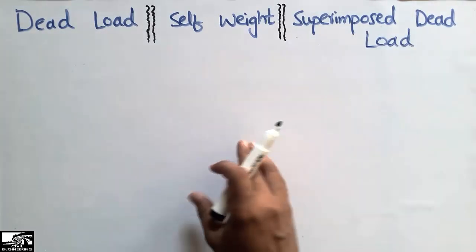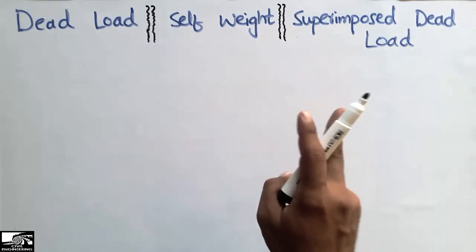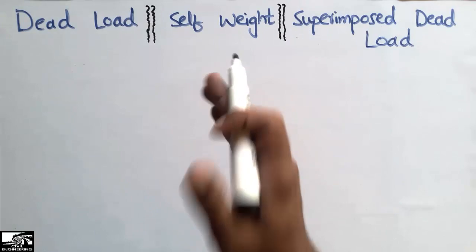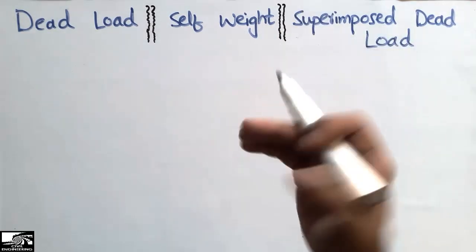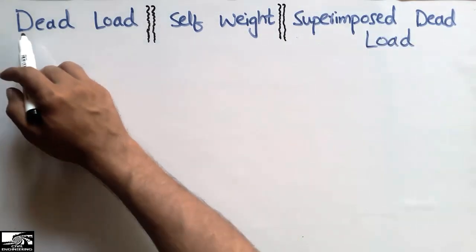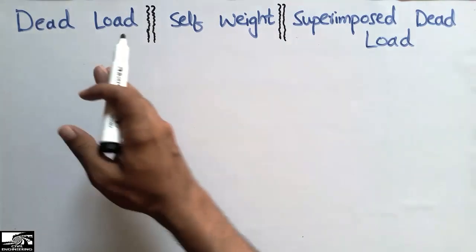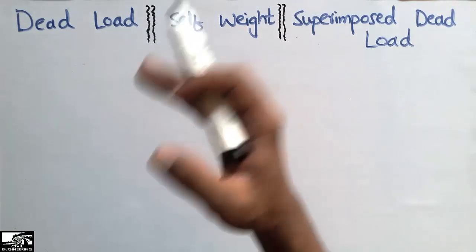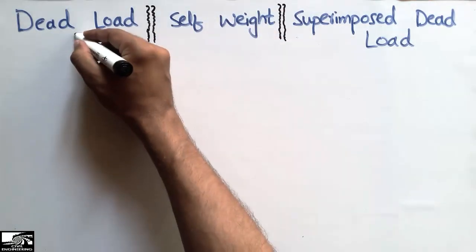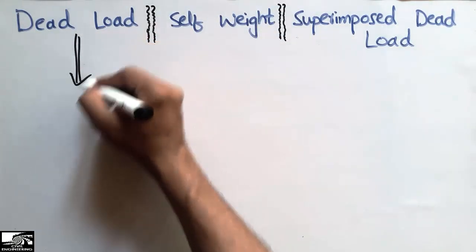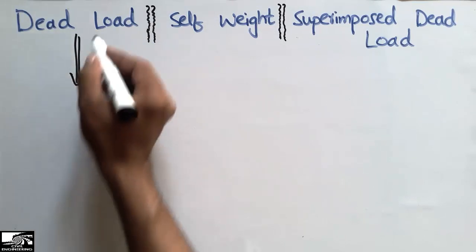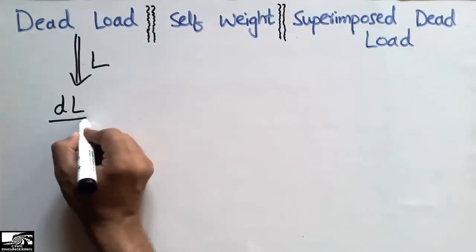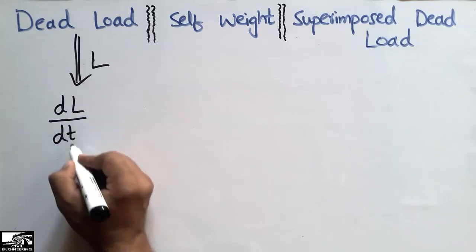As we know, there are two types of load: one is the dead load and one is the live load. The live load is the type of load which changes with time. The dead load can be defined as the load on the structure which is not going to change with time or with place. If I represent the dead load by L,